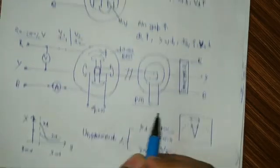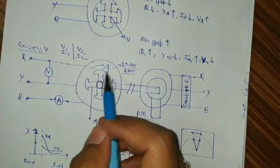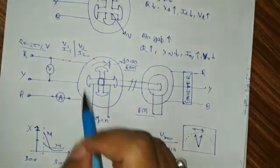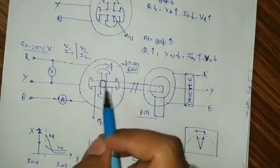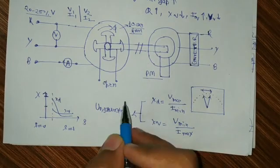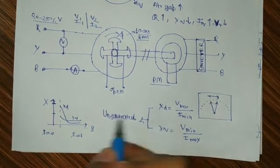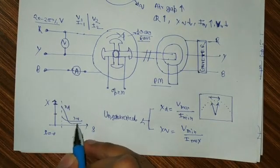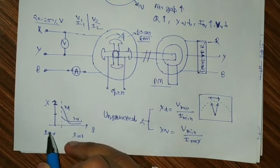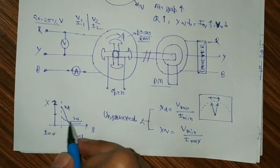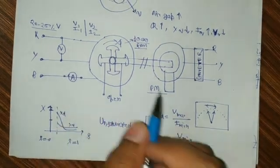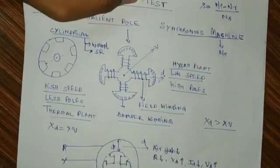These values are obtained when the rotor is running at slip speed, so these values will be unsaturated. Whenever this machine is used in a plant, this rotor will run at synchronous speed, so the reactance will be different. To find the exact unsaturated reactance, we will do a plot between various values of Xd and Xq at different speeds, and at slip equal to zero — meaning at synchronous speed — we can extrapolate this plot and get the exact values of Xd and Xq. This is all about the slip test of a salient pole synchronous machine. Thank you very much.